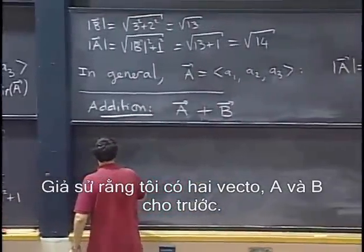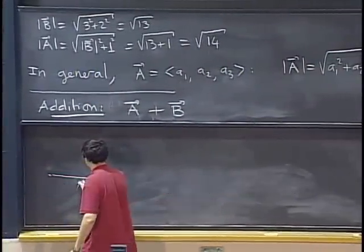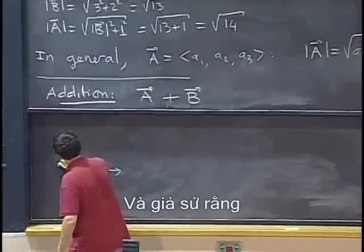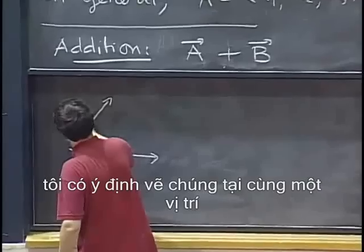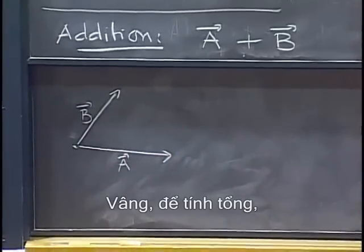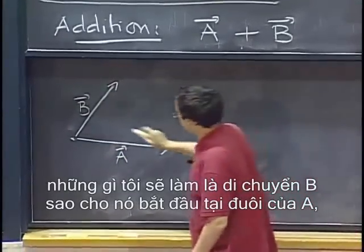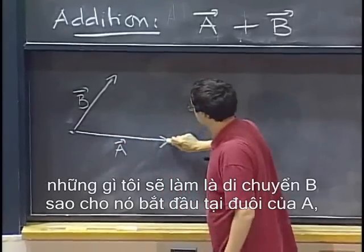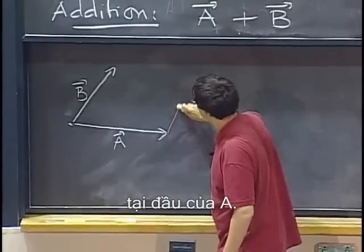So, let's start with the geometry. So, let's say that I have two vectors, a and b, given to me. And, let's say that I thought of drawing them at the same place to start with. Well, to take the sum, what I should do is actually move b so that it starts at the end of a, at the head of a.